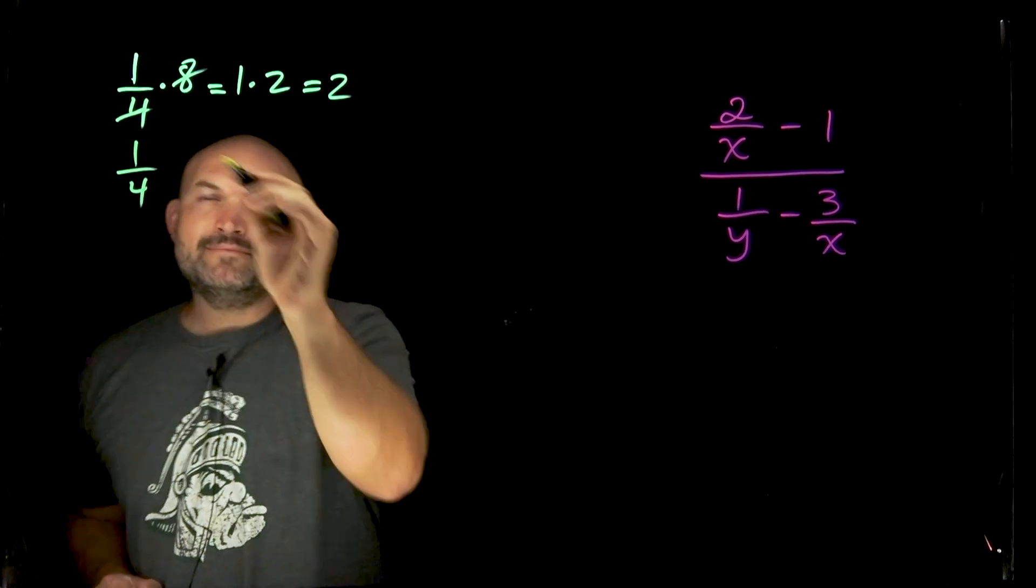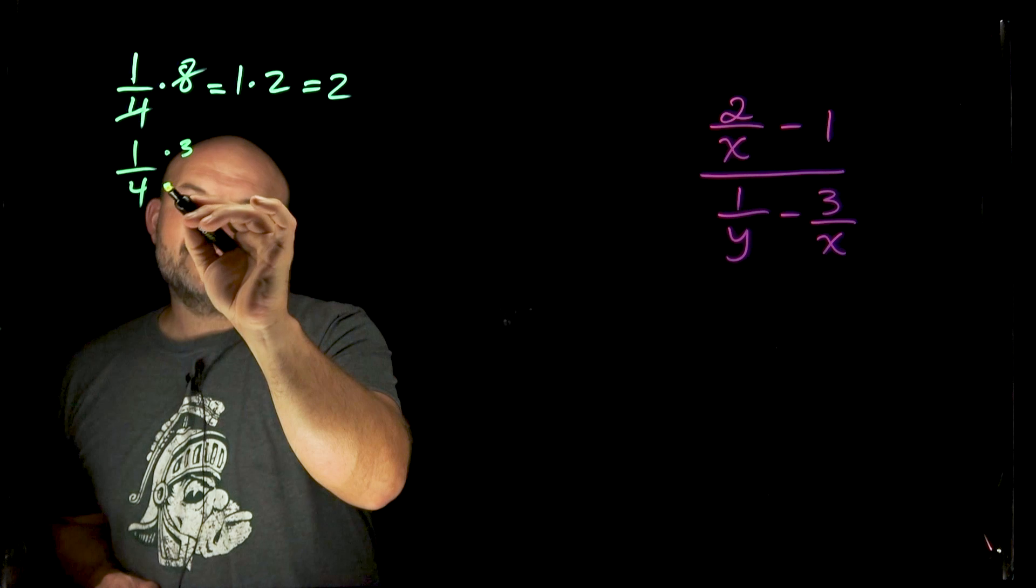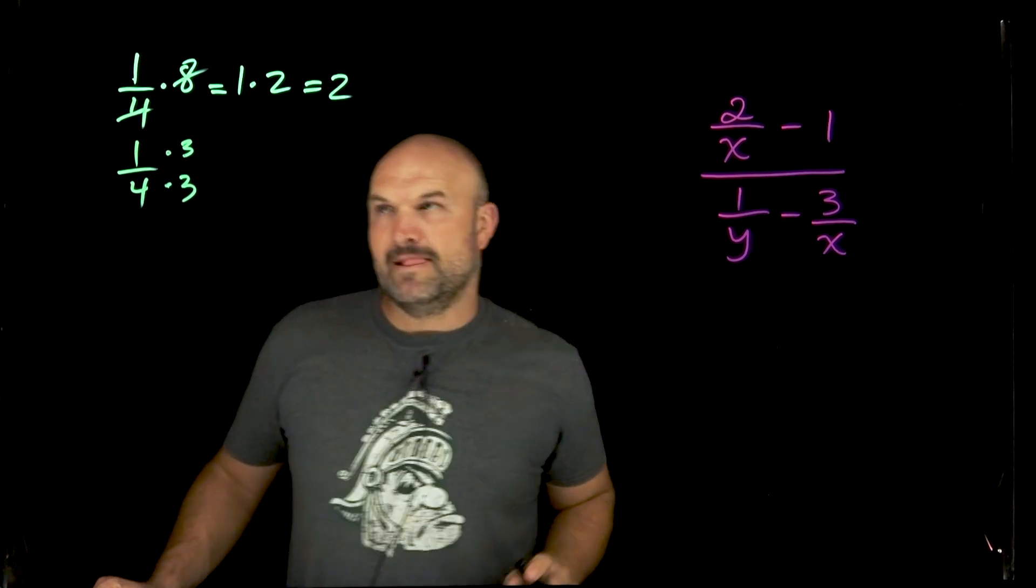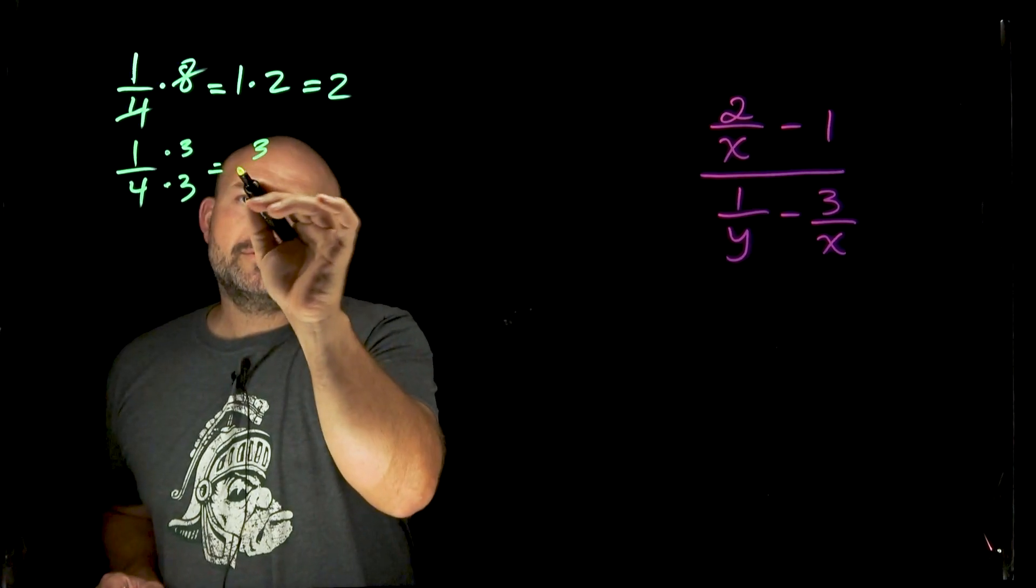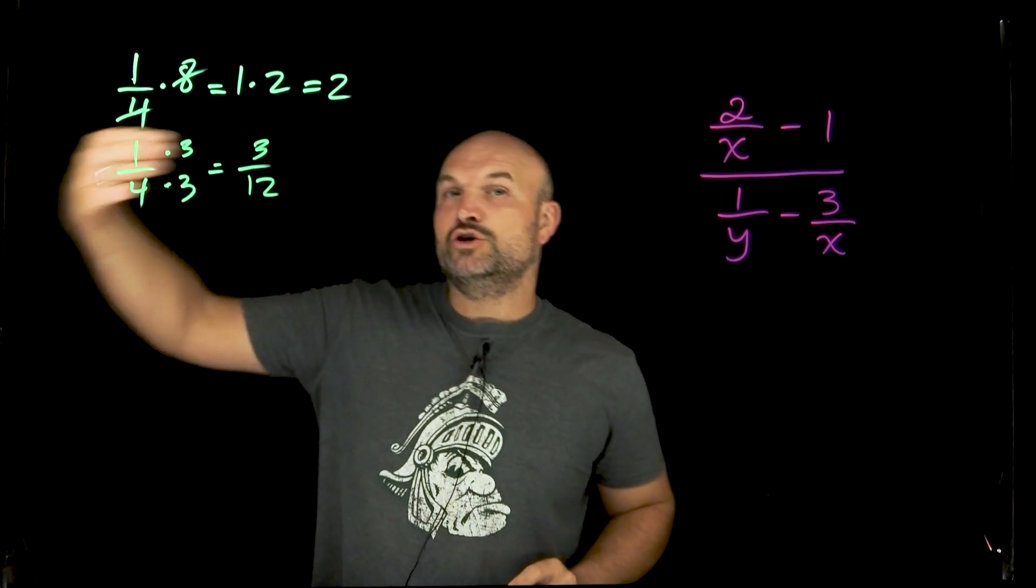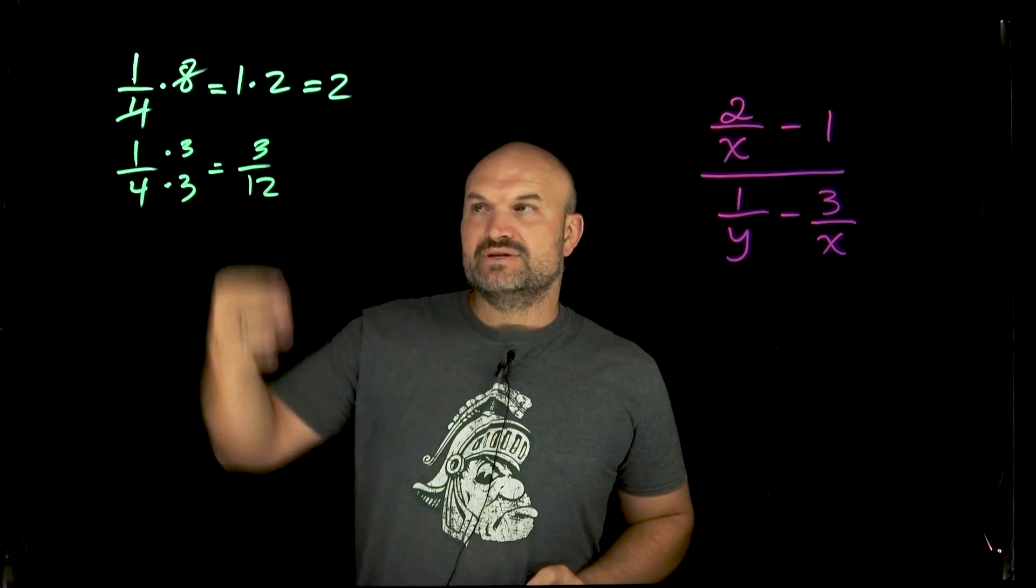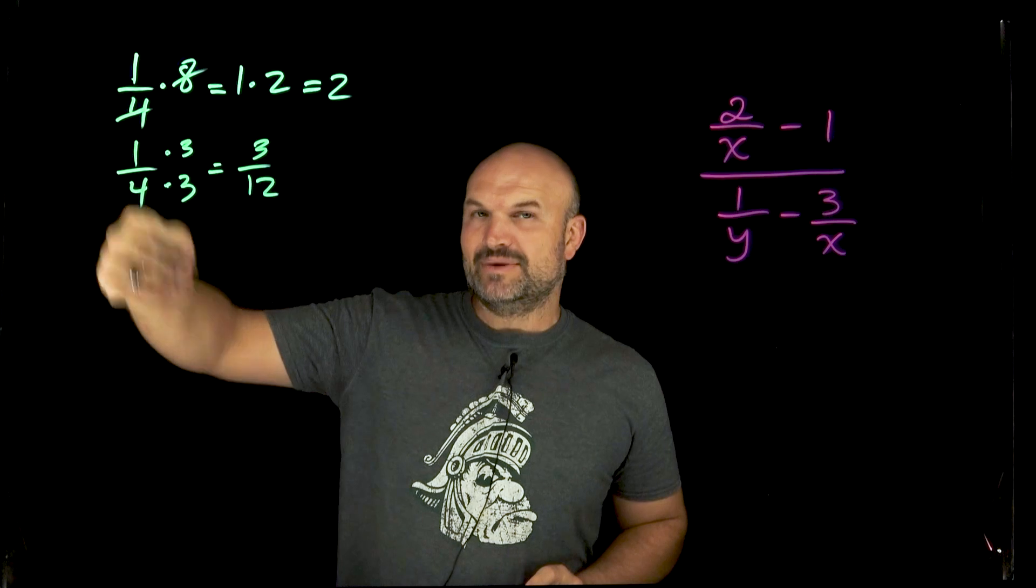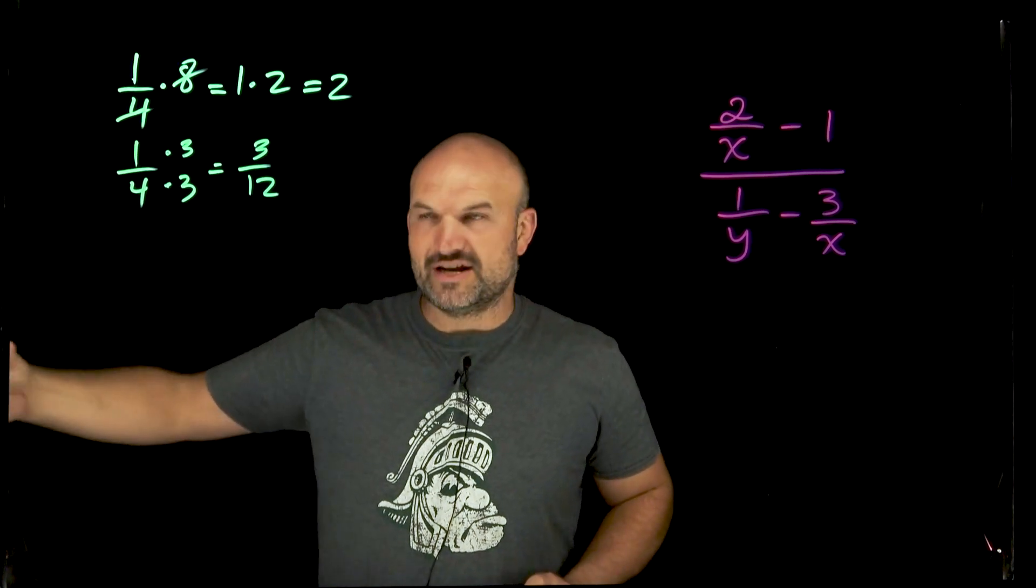Another thing: if I had 1 over 4, if I multiply by 3 times 3 in the numerator and the denominator, that is going to produce a fraction of 3 over 12, which is exactly equivalent to my 1 fourth. So as long as I did the same thing in the numerator and the denominator, I am producing equivalent fractions.